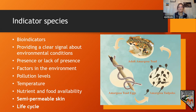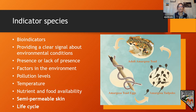Many amphibians have life stages that utilize both terrestrial and freshwater systems. In the Amargosa toad life cycle, there are two portions where they utilize freshwater ecosystems; in its adult stage, they live on terrestrial ecosystems.